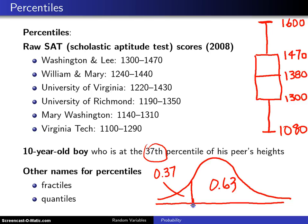So this value right here is the 37th percentile, and sometimes we write that as x sub 0.37. Percentiles are not the only names given — they are also known as fractiles and quantiles, and you'll see those used in other textbooks and out in the literature as well.